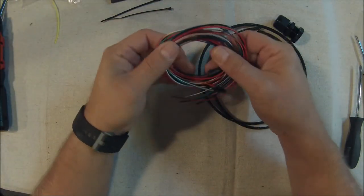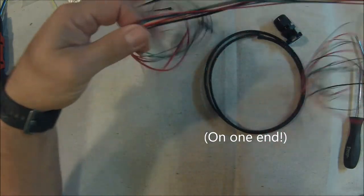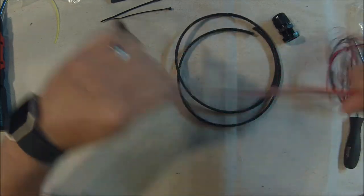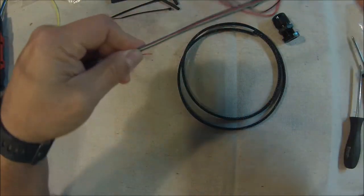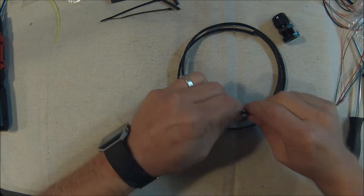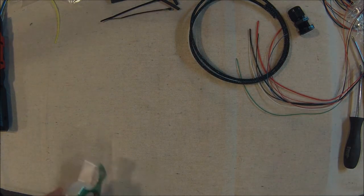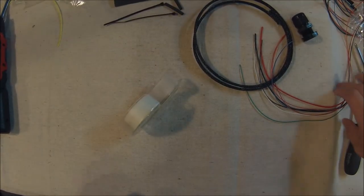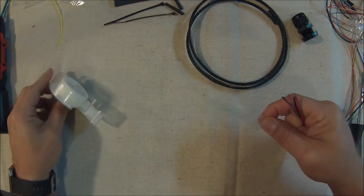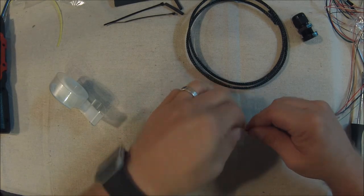Now this wiring bundle is pre-terminated. You want to get it all spooled out, and then we're going to route this through the wiring loom. In order to make that task easier, we're going to use scotch tape to help it go through. Take your scotch tape and bundle this up on the end.